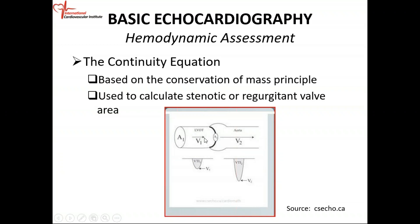Since the flow is going to be the same and this area is reduced, then the velocity is going to be higher. If it's a closed system and you have a narrowing, then the velocity at the narrowed area is going to be greater because the flow is supposed to be the same.